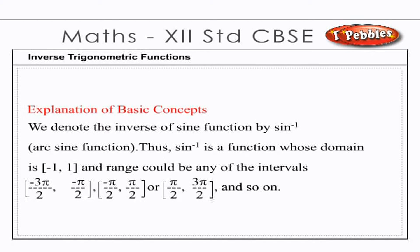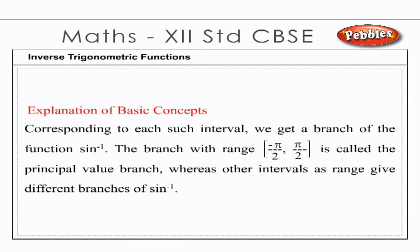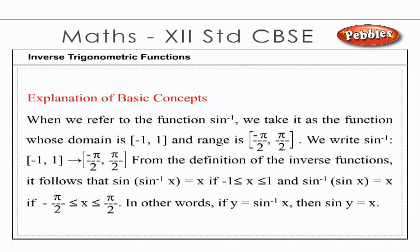We can therefore define the inverse of the sine function in each of these intervals. We denote the inverse of the sine function by sin⁻¹ or arc sine. Thus sin⁻¹ is a function whose domain is [−1, 1] and range could be any of the intervals [−3π/2, −π/2], [−π/2, π/2], [π/2, 3π/2], and so on. The branch with range [−π/2, π/2] is called the principal value branch. When we refer to the function sin⁻¹, we take its domain as [−1, 1] and range as [−π/2, π/2]. We write sin⁻¹: [−1, 1] → [−π/2, π/2].